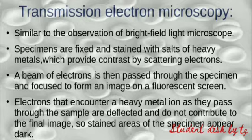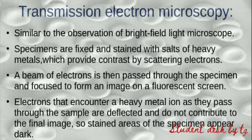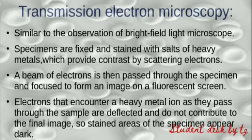In TEM, the specimen is fixed and stained with salts of heavy metals — similar to what we do in bright field microscopy. We then pass a beam of electrons through the specimen, which are scattered and focused to produce an image on a fluorescent screen. Electrons that encounter heavy metal ions will be deflected and will not contribute to the final image.